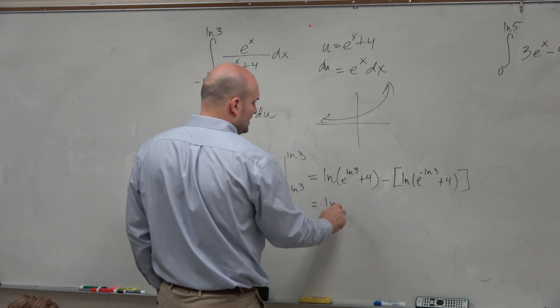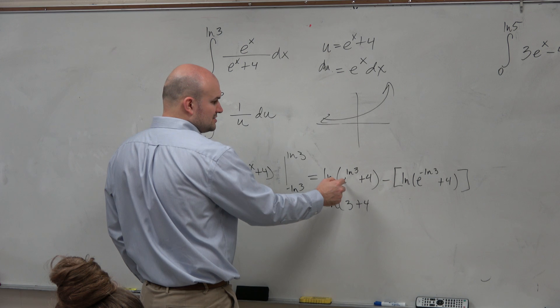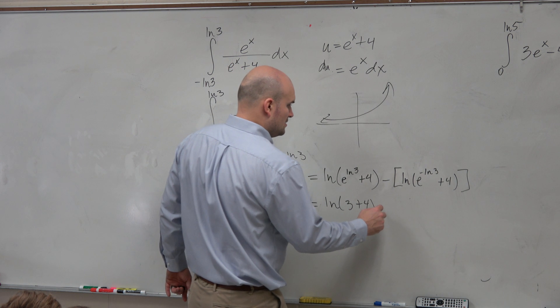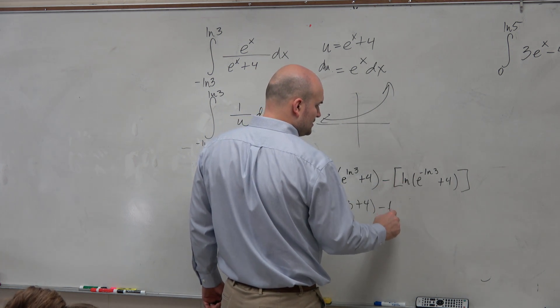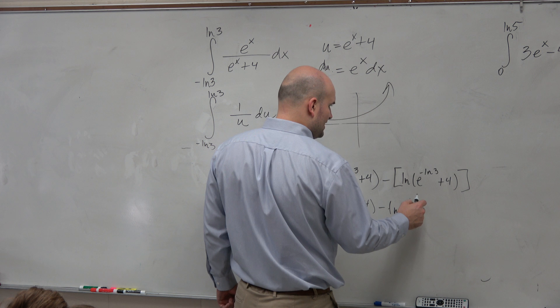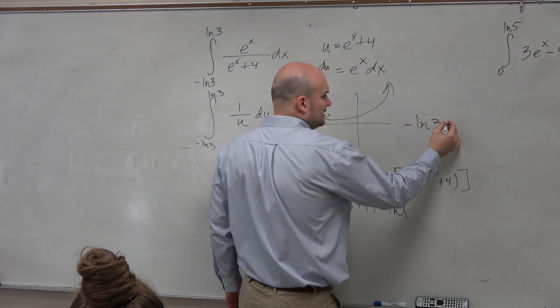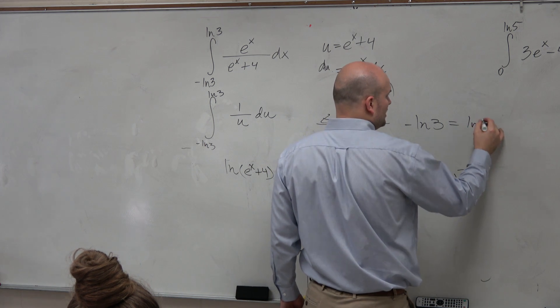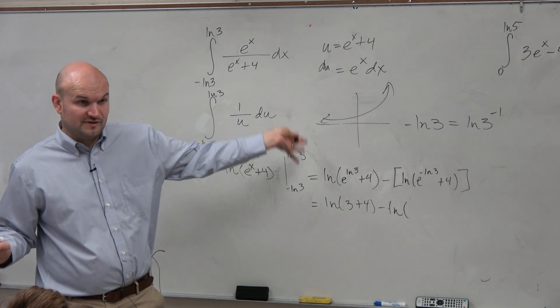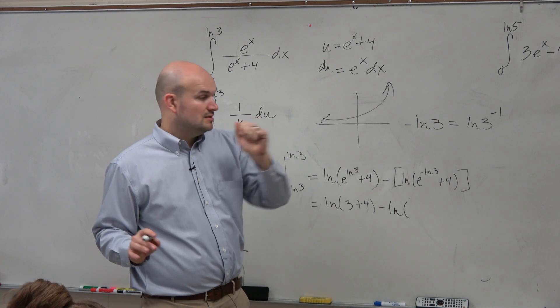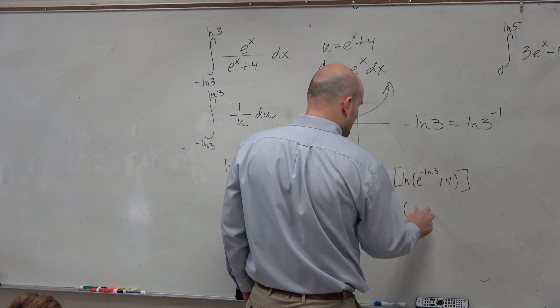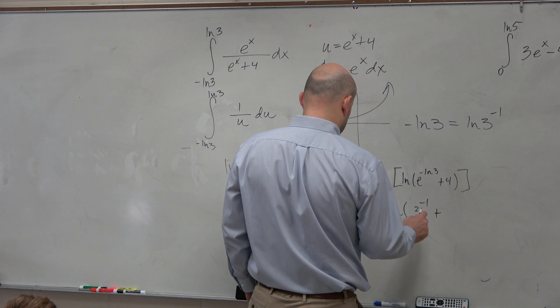We can simplify this to ln of 3 plus 4, right, using the rules of logarithms. e to the ln of 3 is just equal to 3. Minus here. I don't really need my brackets here. Here, can't I put this as a negative? I could rewrite this as negative ln of 3 is the same thing as ln of 3 to the negative 1. Would you guys agree with me on that one? You can take the constant or the coefficient and throw it up as the exponent. So therefore, I can rewrite this as 3 to the negative 1st power plus 4.